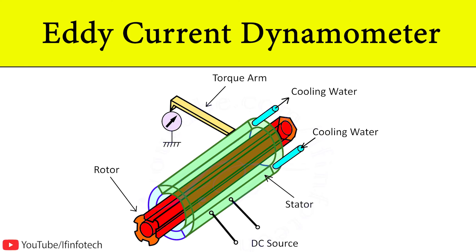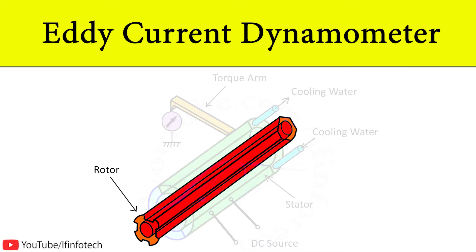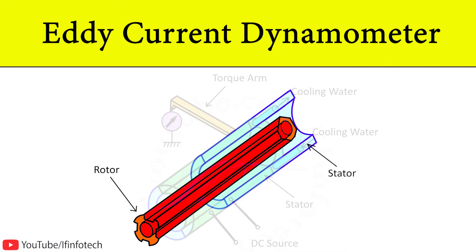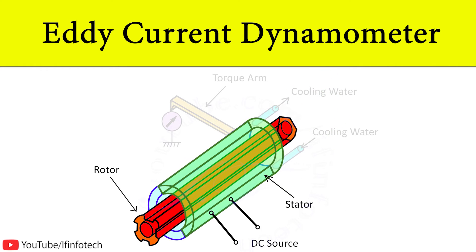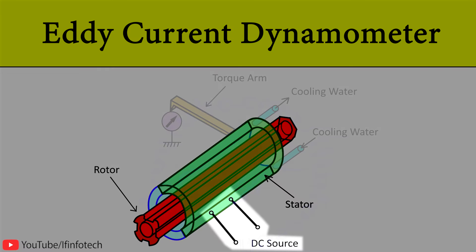In today's session, we will learn about the eddy current dynamometer. It consists of a toothed non-magnetic solid metallic rotor connected to the shaft whose power is measured. The non-magnetic rotor rotates inside a smooth cast iron stator. The stator is provided with an exciting coil connected to a DC source.